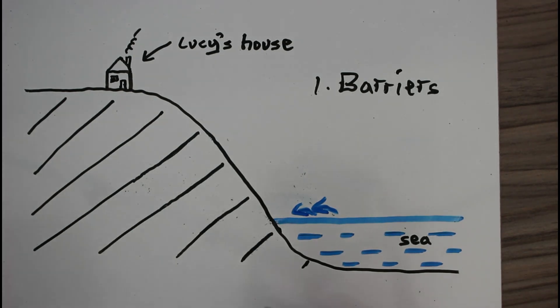A third method of hard engineering is rock armour. These are massive boulders put at the base of the cliff so the waves crash into the boulders instead of the important rock of the cliff. They're relatively cheap but some people think they look unattractive.